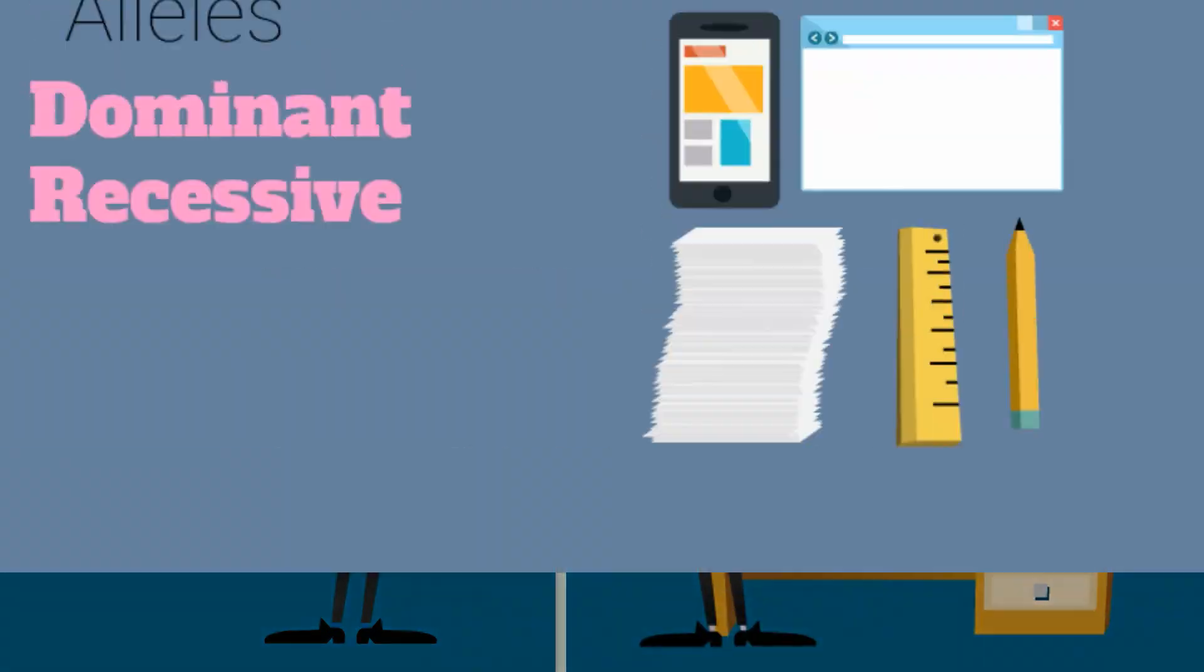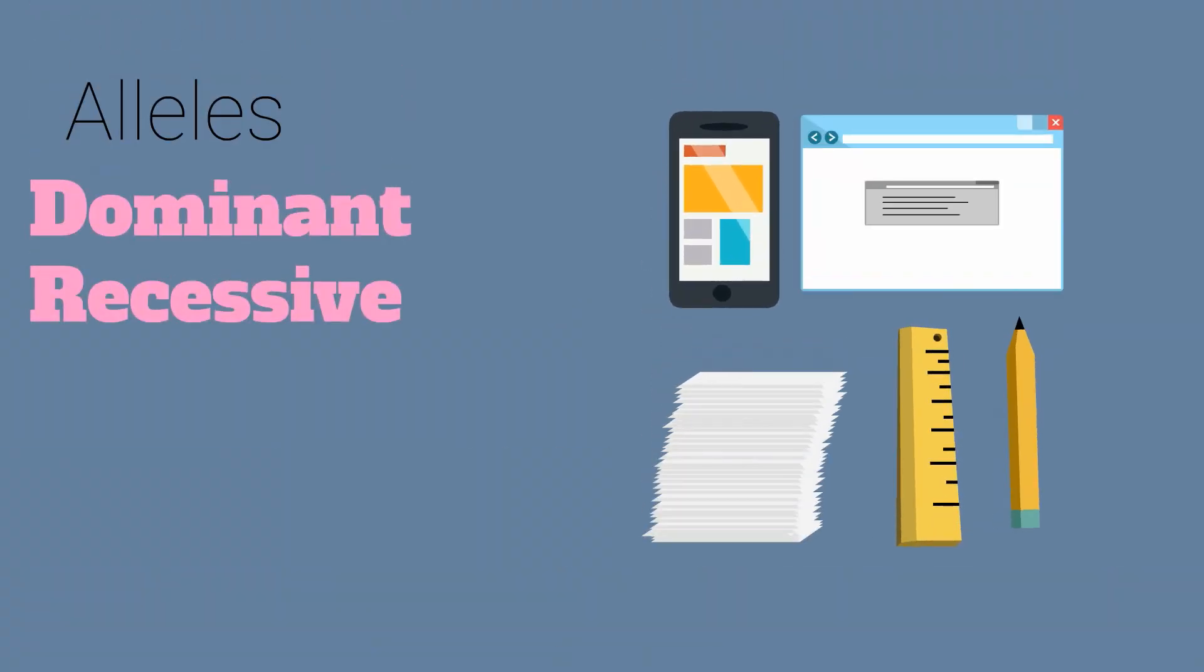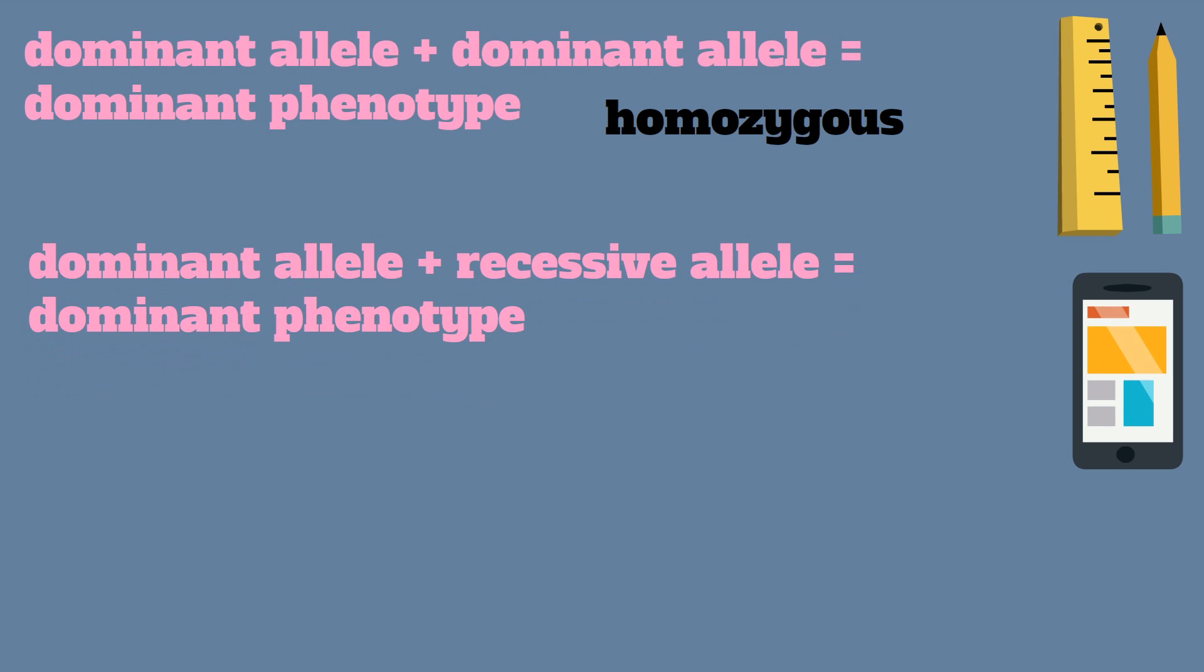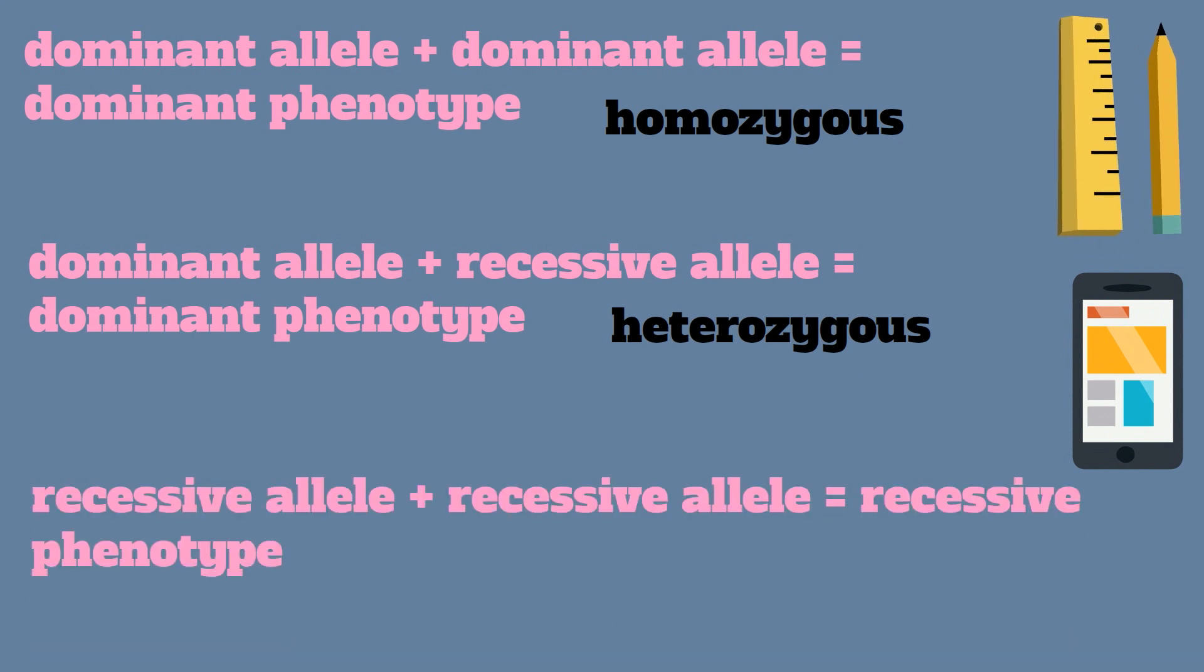Alleles are described as either dominant or recessive, depending on their associated traits. When solving Punnett squares, keep the following in mind. A dominant allele and a dominant allele equals a dominant phenotype, and this would be homozygous because both alleles are the same. A dominant allele plus a recessive allele equals a dominant phenotype, and this is heterozygous because you have two different types of alleles. A recessive allele plus a recessive allele equals a recessive phenotype, and this would be homozygous.